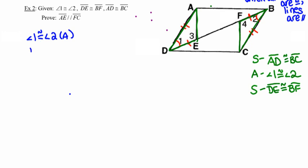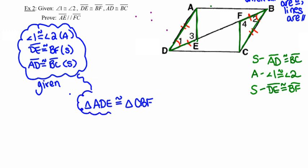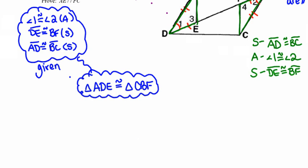Getting down to business: angle 1 is congruent to angle 2 — that's my pair of angles. DE is congruent to BF — that's my first pair of congruent sides. Segment AD is congruent to segment BC — that's my second pair of congruent sides. All of those are given to be true. Right from those three statements, I can conclude that triangle ADE is congruent to triangle CBF — being very careful to match up their corresponding congruent parts — and the reason is side-angle-side.